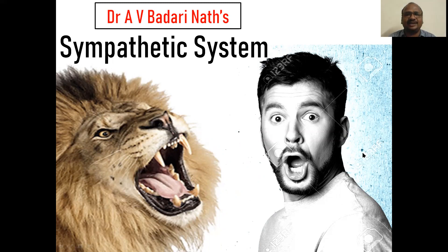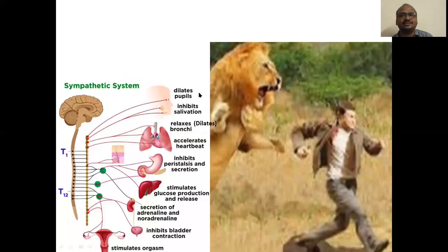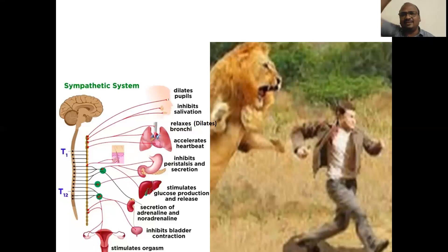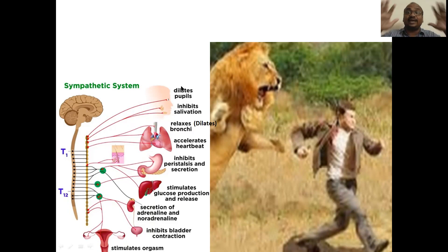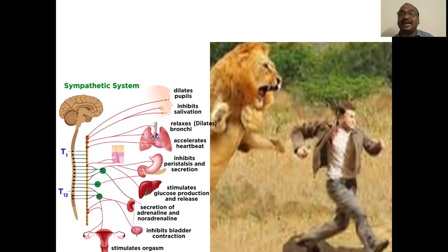Sympathetic system. When you see the tiger, you will start running. So what happened to your body? First one is it dilates the pupil because your reaction is like that. Your pupil will be dilated. Salivation is inhibited.